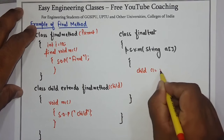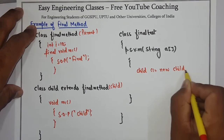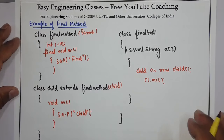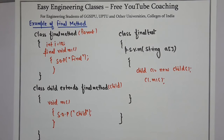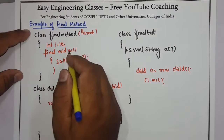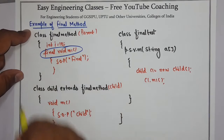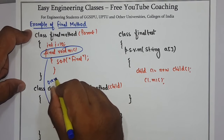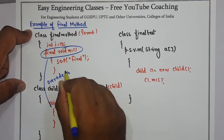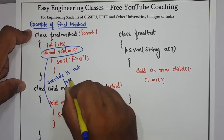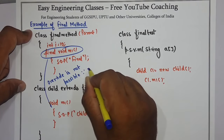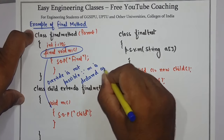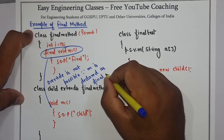Let me write the complete program for you once. Suppose you have written this full program — the error in this program is that m1 is a final method, and I am trying to override this method in the child class, but this override is not possible because m1 is declared as final in the parent class. Try to implement this on your system and you will see the error.